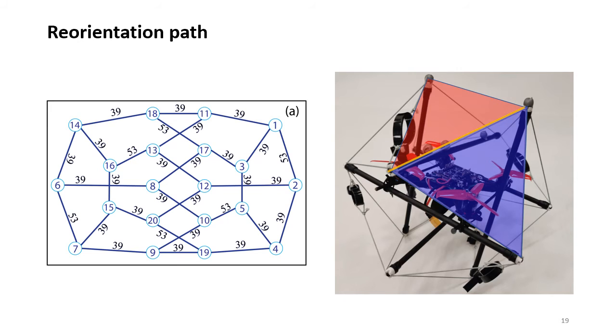Now that we know how to rotate from one face to another, we now want to find out the path of reorientation. To do this, we first create the reorientation graph. Each node in the graph is a contact face, and each edge represents a possible rotation about an edge of the tensegrity. The number on the edge represents the rotation angle in degrees.